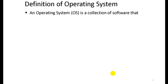So, the definition of an operating system: the operating system is a collection of software that manages hardware resources. It is a type of software — specifically, we call it an operating system because it manages and controls the hardware of the computer.